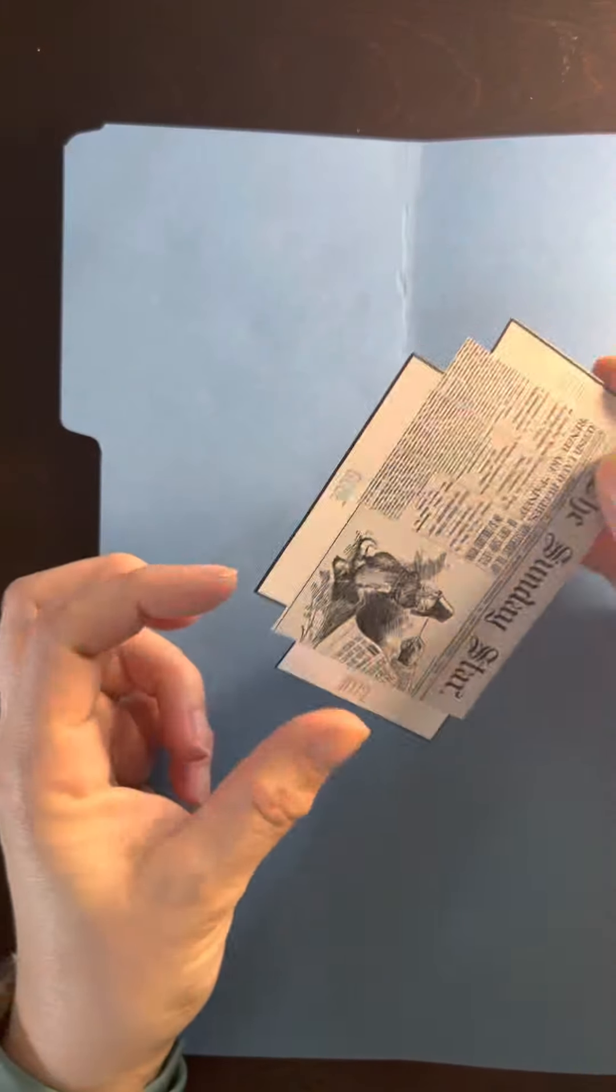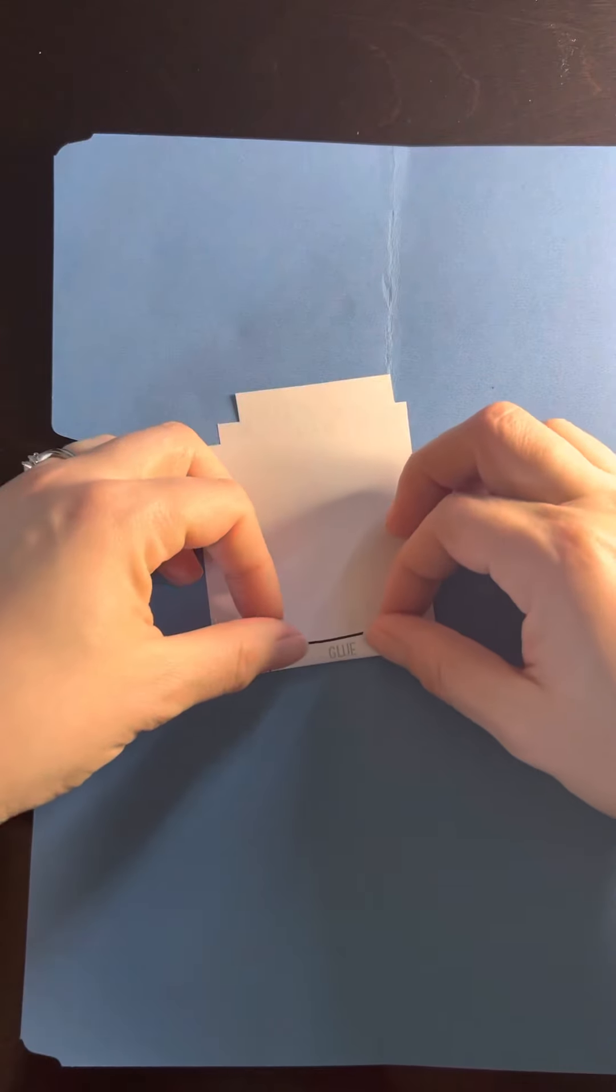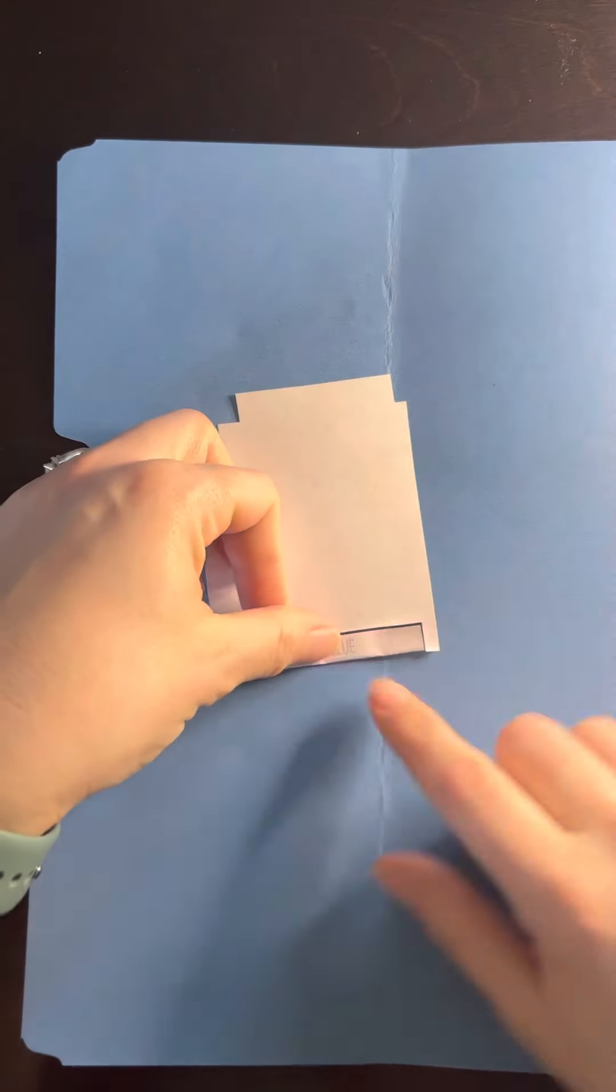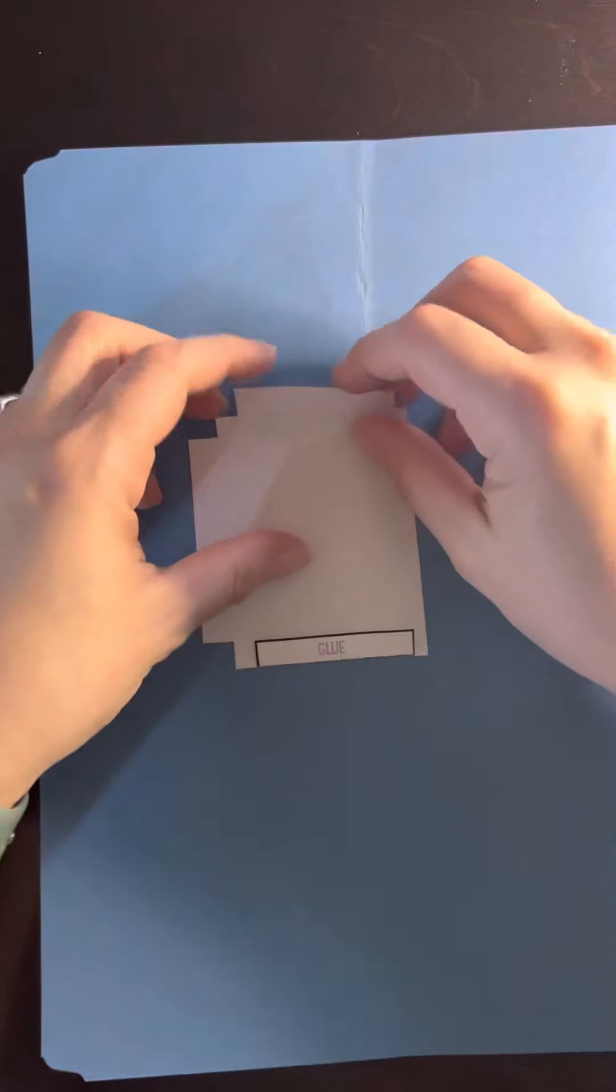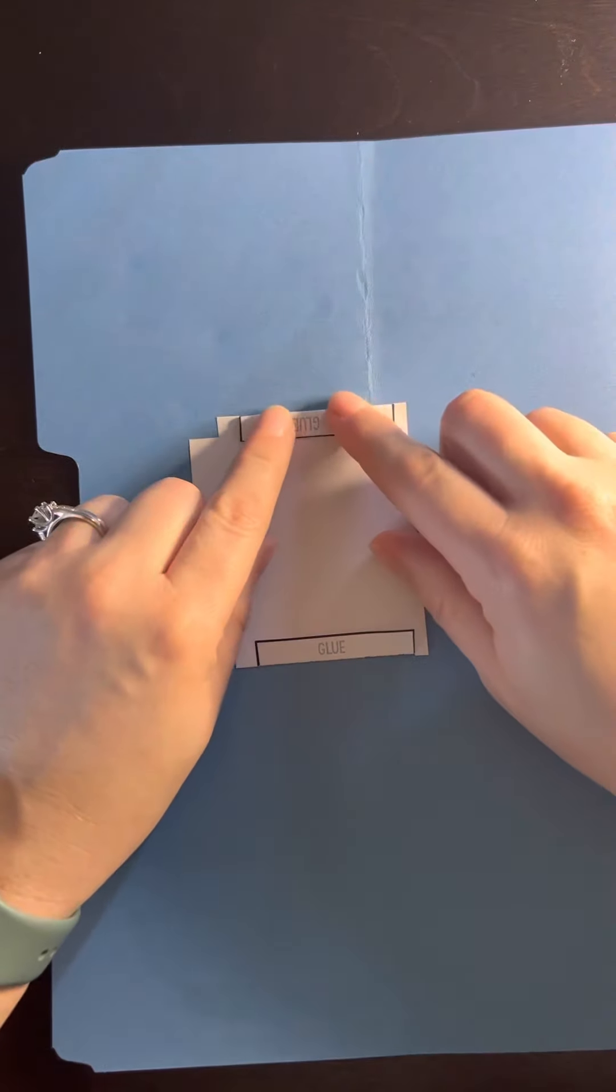So the first thing we're going to do is fold these glue tabs in. I'm going to flip it over and fold these in like this. Make a nice little crease there and a nice little crease here.